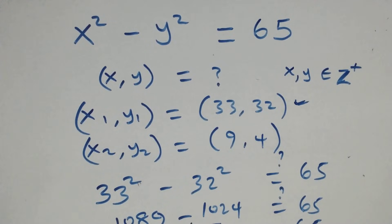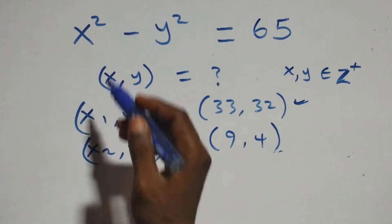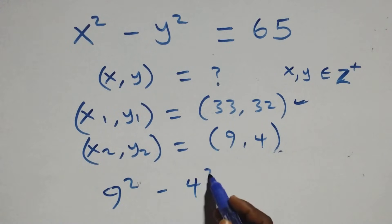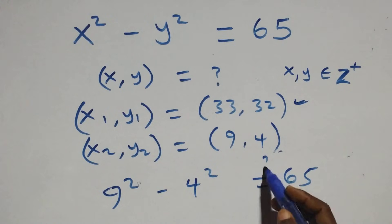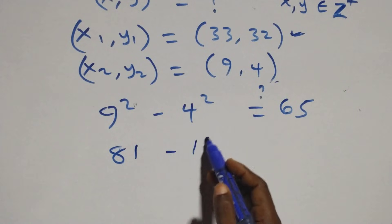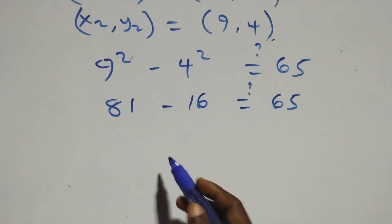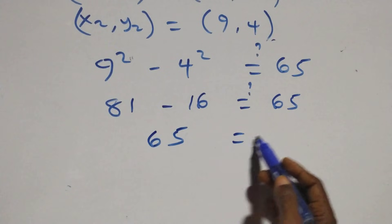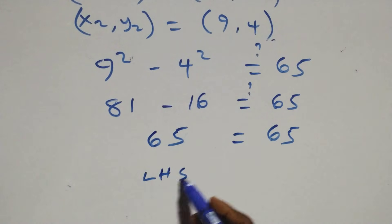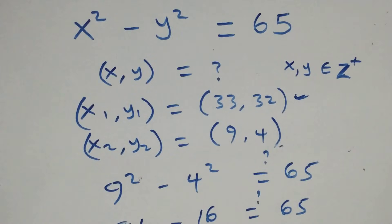We substitute the second solution (9, 4): 9²−4² should equal 65. We have 9² = 81 and 4² = 16, so 81−16 = 65, which equals 65. The left-hand side equals the right-hand side, and therefore the second solution (9, 4) also satisfies the given problem.